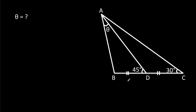In this video, we have been given that BD is equal to CD, angle ACB is 30 degrees, angle ADB is 45 degrees, and angle BAD is theta. We have to find theta.